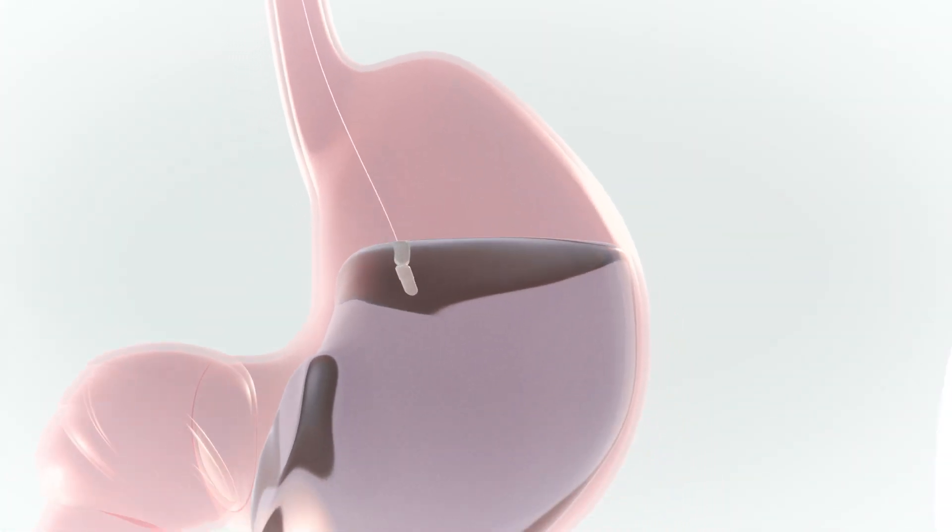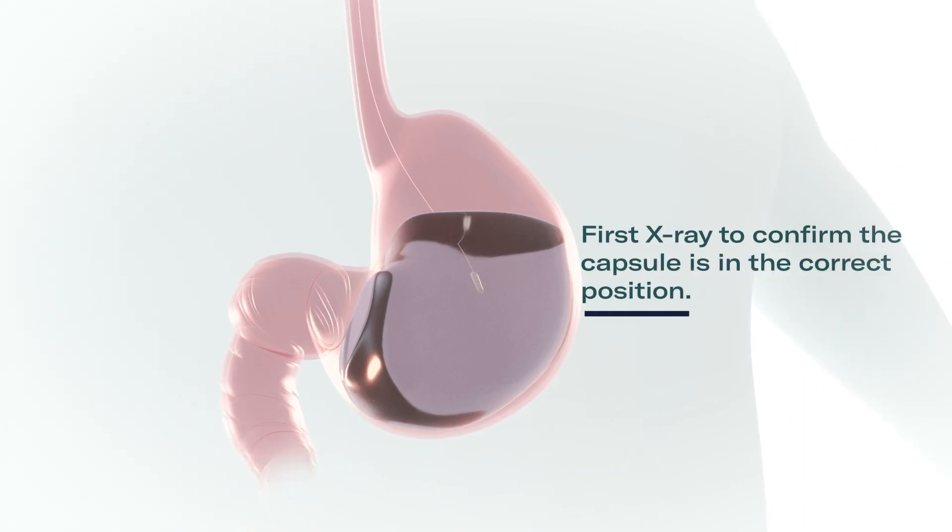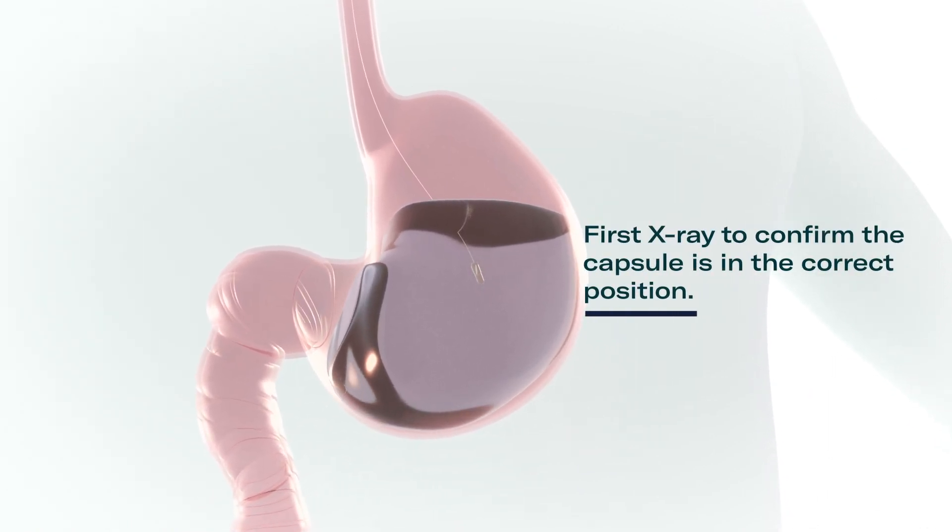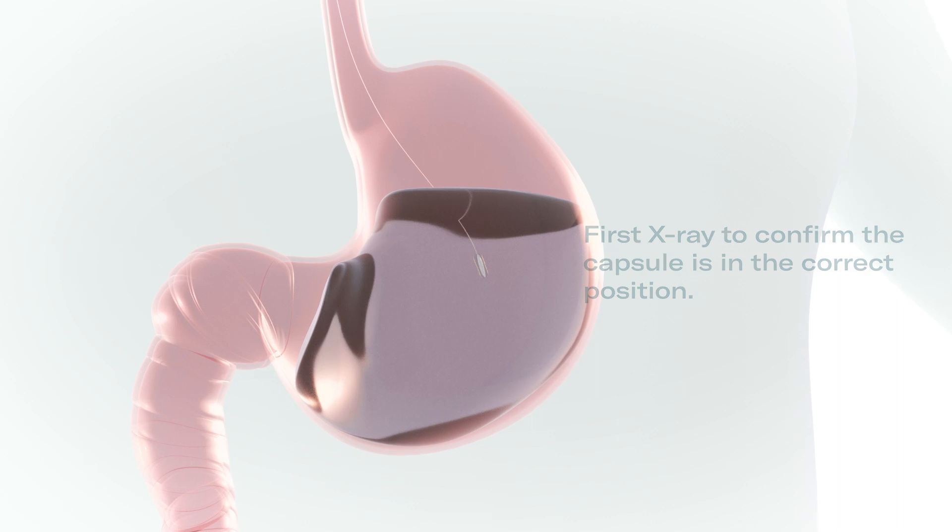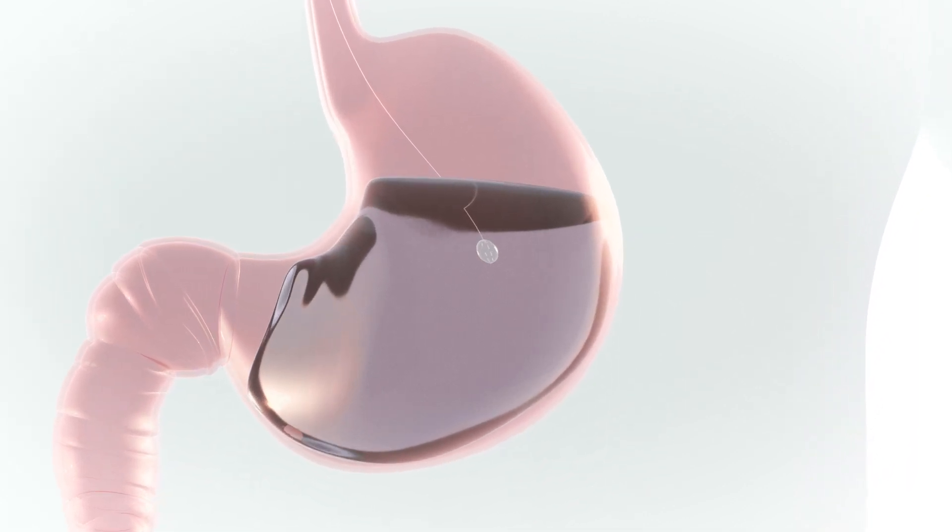Once the balloon is in place, your healthcare professional will take an x-ray to confirm proper placement. Once in the stomach, the vegetarian capsule degrades and the balloon will be filled with 550 milliliters of water.